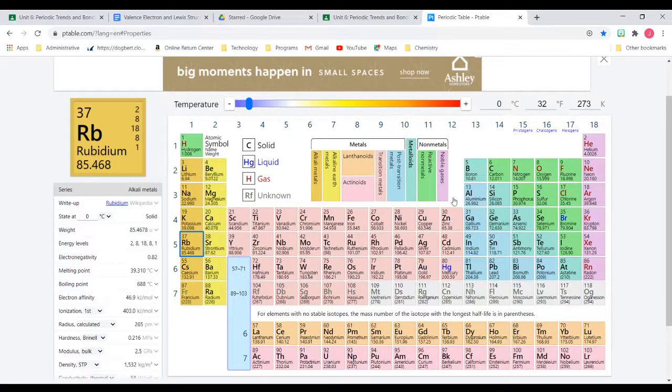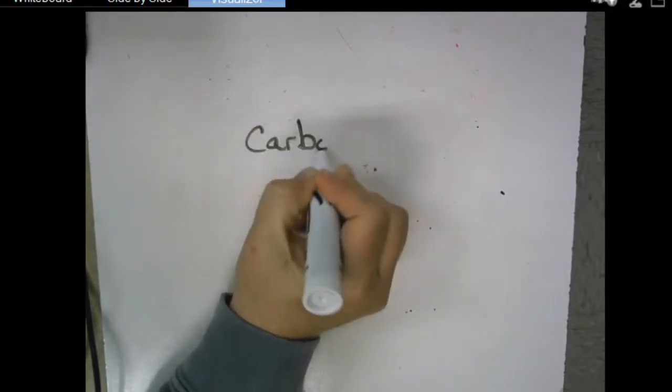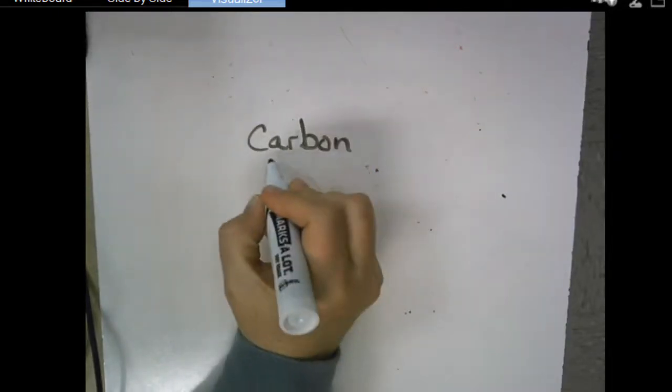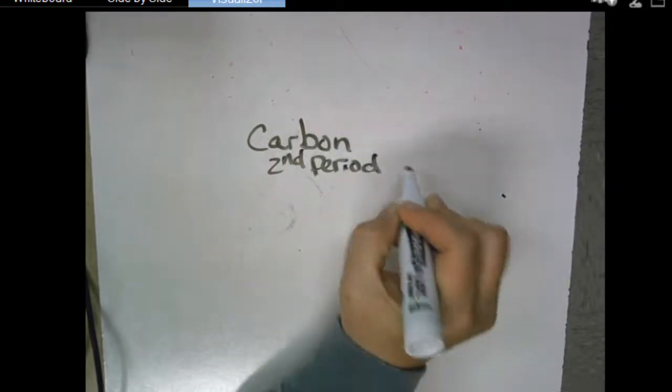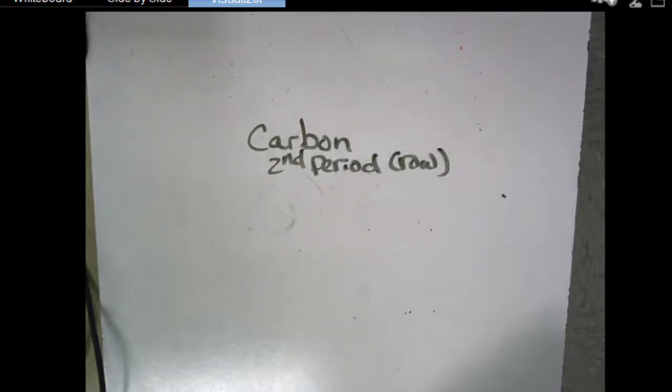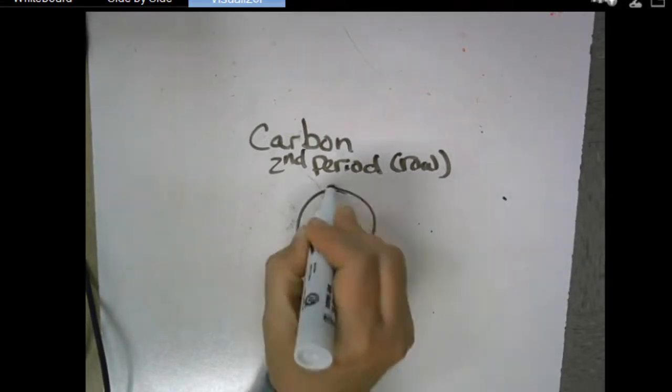And then we're going to draw our Bohr model. Alright, so now we have carbon. We're going to do carbon and it's in the second period, which is the second row. So we know it has two rings. So I'm going to do one and then I'm going to do two.